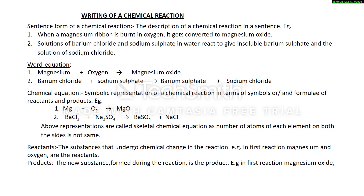Now, how can we write a chemical reaction? There are a number of ways. The first is the sentence form. For example: 'When magnesium ribbon is burnt in oxygen, it gets converted to form magnesium oxide.' Another sentence-form example: 'A solution of barium chloride and sodium sulfate in water reacts to give insoluble barium sulfate and a solution of sodium chloride.'